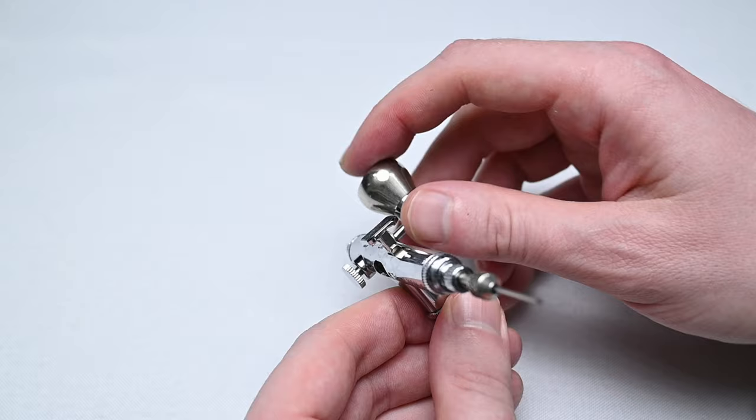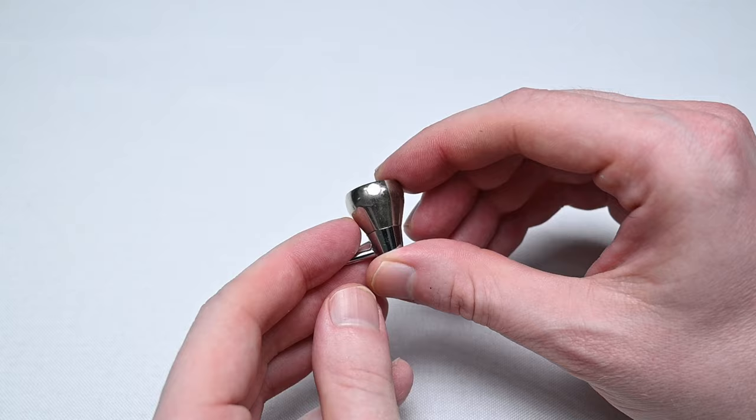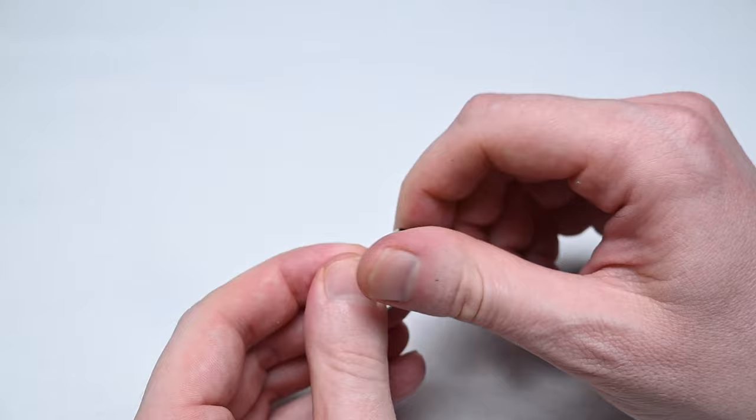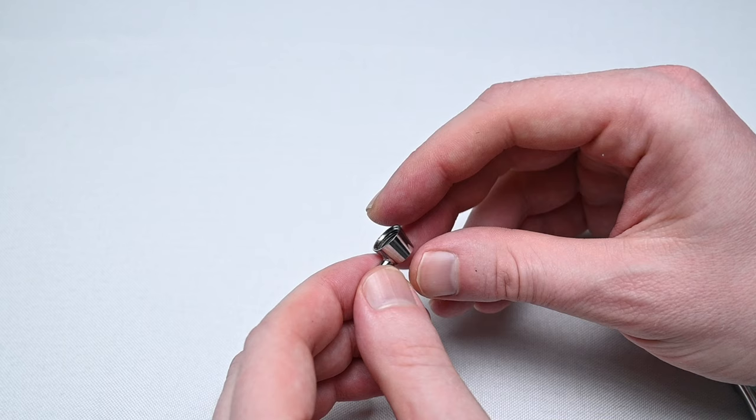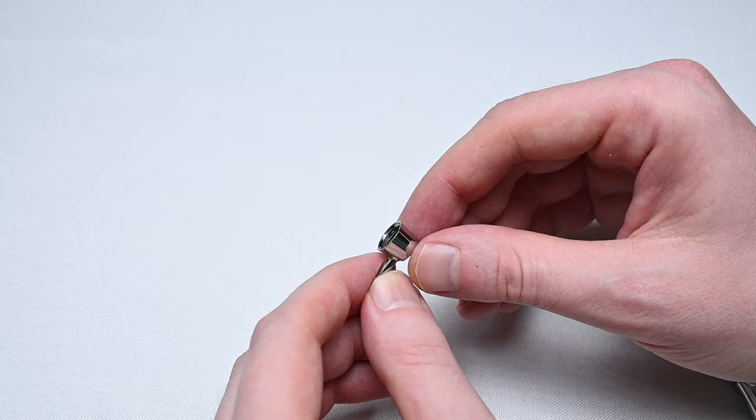This cup fits into the airbrush through compression. It's just basically friction holding it in there. There's no sort of screws or threads. And at the end of a painting session, I just like to remove this cup and just kind of flush everything out with some cleaner or some distilled water.